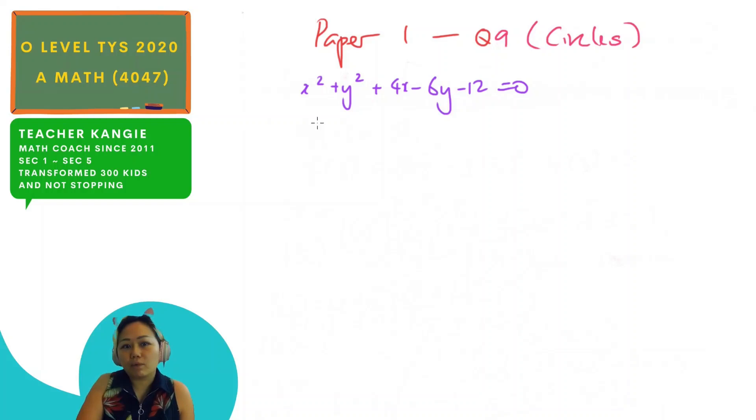So, how do I do that? I'm going to group the x together. So x squared plus 4x will be together. Then after that, y squared and 6y will be together. The minus 12 I shall bring it to the other side, which is 12.